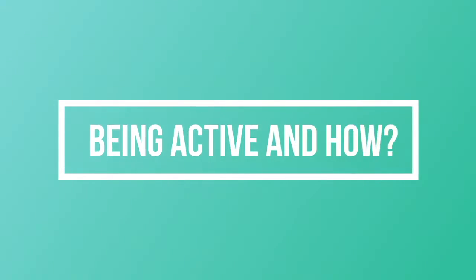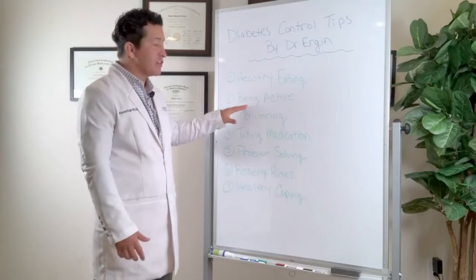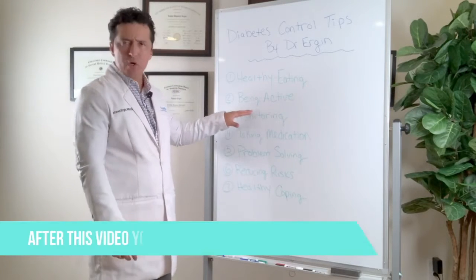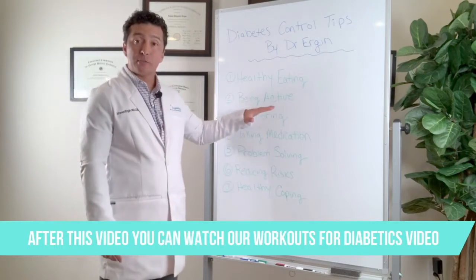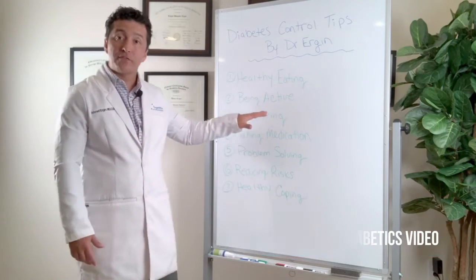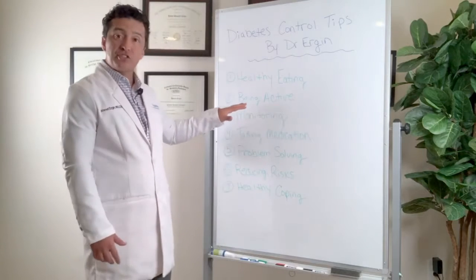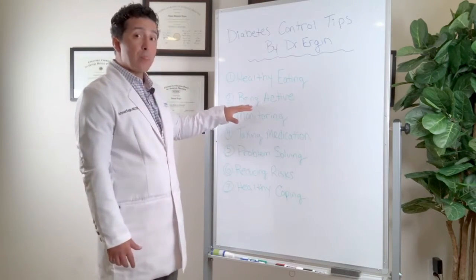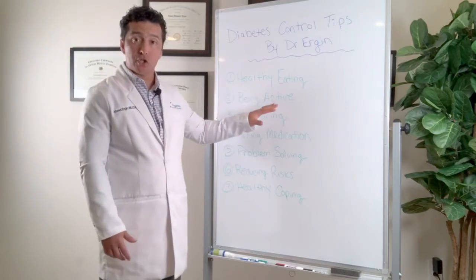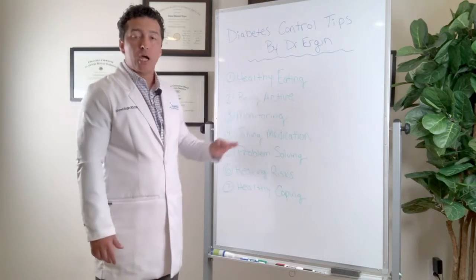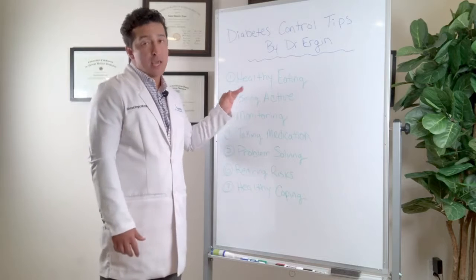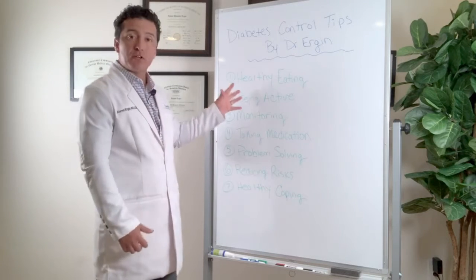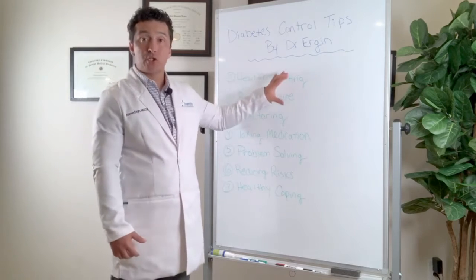Now being active, again being active is very structured. We have an exercise for diabetics or workouts for diabetics video there. I explained that you have to do 150 minutes of moderate exercise or 60 to 90 minutes if it is vigorous or intense exercise, but having a structured regular aerobic as well as resistance training is fundamental in managing your diabetes.